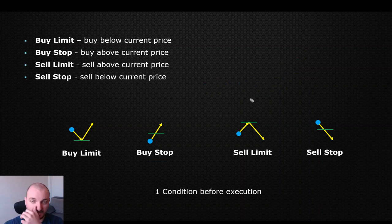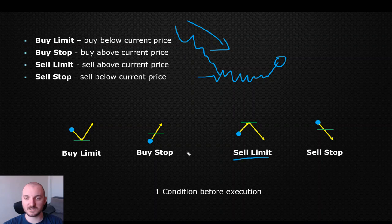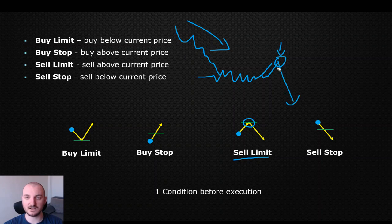Then we have sell limit and sell stop — pretty similar situation, just vice versa. We have the price moving here, we want to go ahead and trade the pullback. We are currently in a bearish momentum, looking for deeper pullbacks, and this is where the sell limit comes into play. If the current price moves a bit higher and reaches the zone that we want to see reached, this is where the sell is going to be executed, and our expectation is that the price will continue lower.